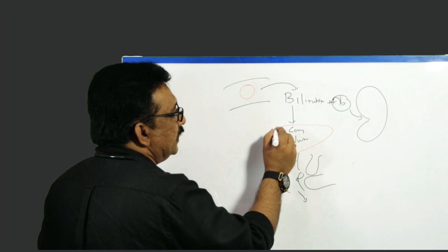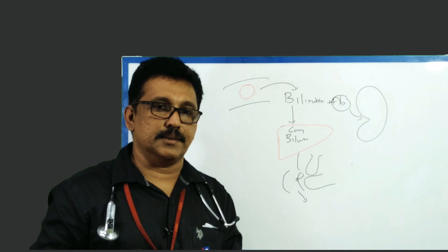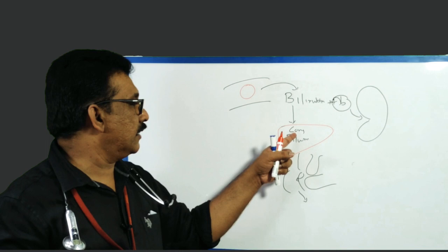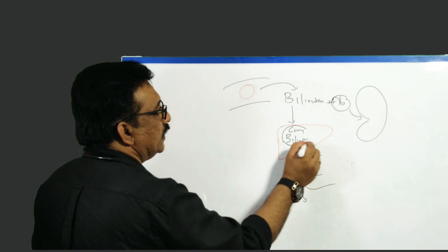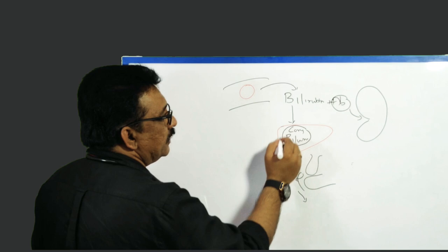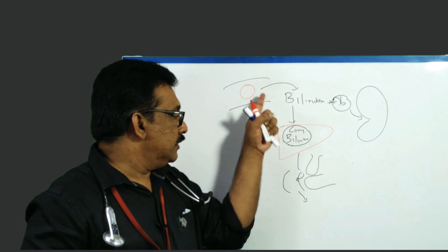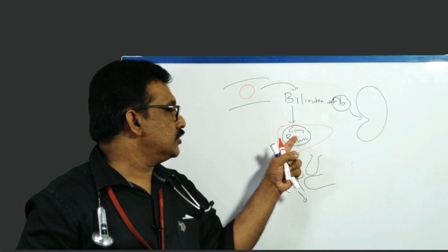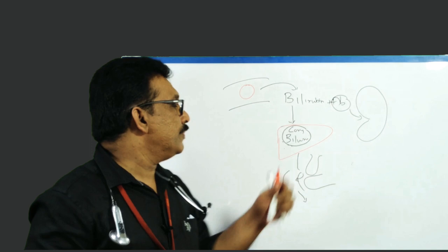Now, if there is a problem in the liver — for example, viral hepatitis (Hepatitis A, B, C, or D) — this can produce damage in the liver. The conversion may be reduced, but sometimes after conversion there is a problem inside the liver, elevating conjugated bilirubin. In liver disease, unconjugated bilirubin is also elevated, but it is predominantly conjugated bilirubin that is elevated. So conjugated bilirubin elevation is greater than indirect bilirubin elevation.